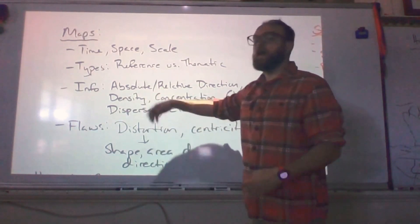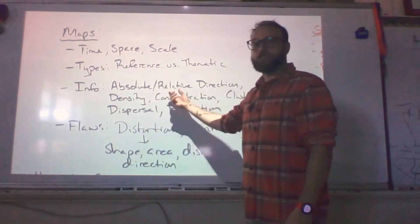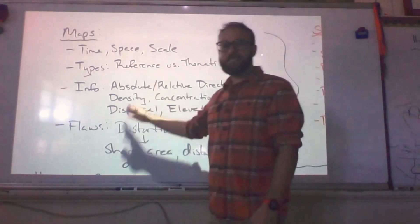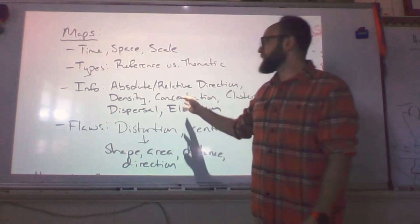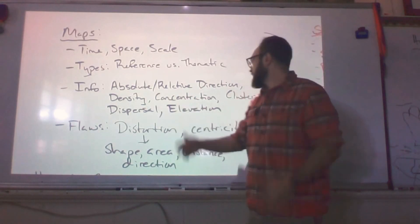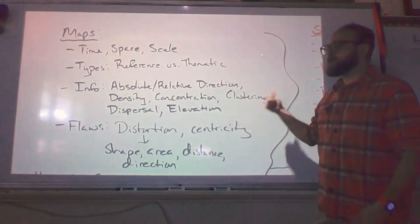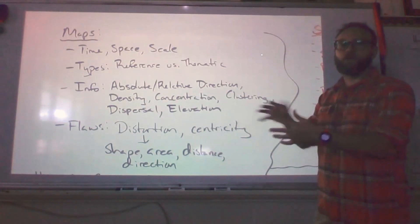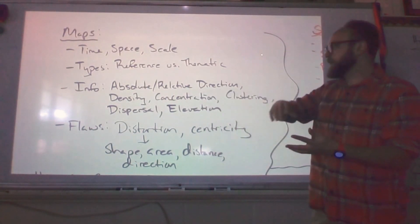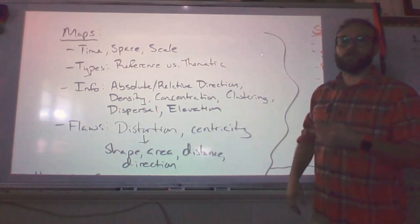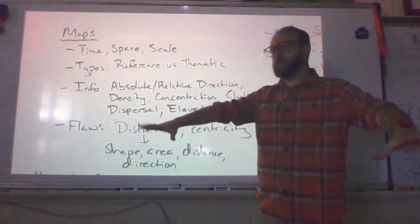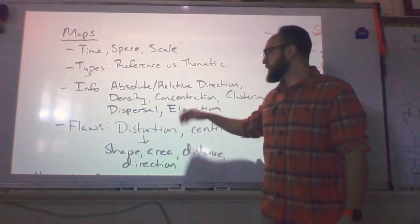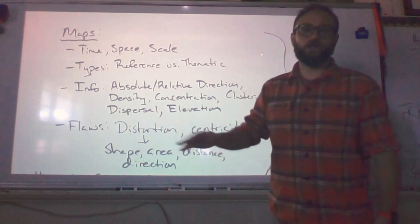Density would be how many units per. Concentration would be how spread out they are. So a highly dense area would have lots of people like New York city, 20 million people. Concentration would be how spread out they are in that area. Clustering is sort of a function of whether or not we are dense over a given space and time. This is usually referring to how we use land in rural populations. Some cities are very clustered, others are not. Dispersal would be how separated we are. So dispersed settlements would not be concentrated.